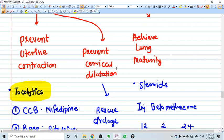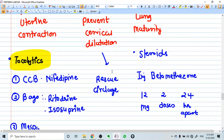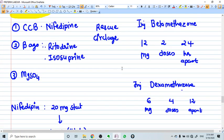Lung maturity is a very important thing in preterm labor. For lung maturity, we use steroids. Two preparations are available. Injection betamethasone 12 mg, 2 doses, 24 hour apart. Injection dexamethasone 6 mg, 4 doses, 12 hour apart.